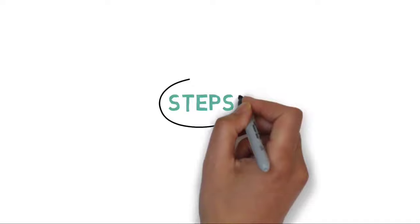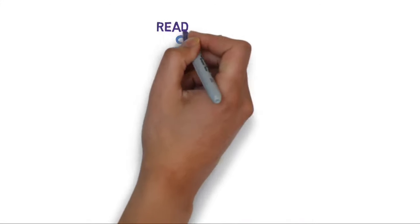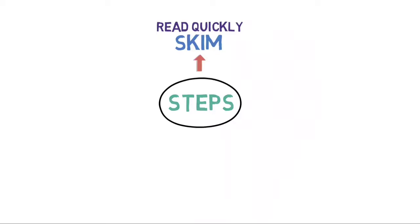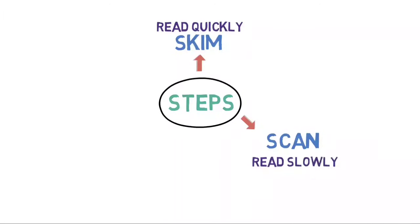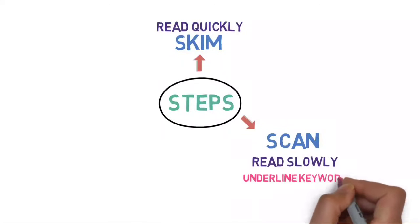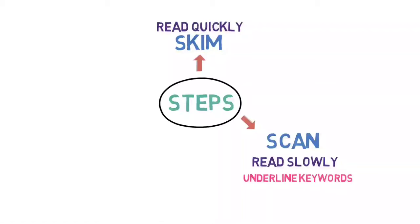Now, let's learn the steps to solve questions related to reading comprehension. There are three steps involved in solving this kind of question. Step 1: Skim. Here you need to read the passage fairly quickly to get a general idea of what the author is saying. Step 2: Scan. Read the passage again, this time in a slow manner to know the details. Underline the keywords and sentences. You may also create a quick mind map of the passage.